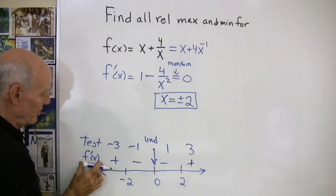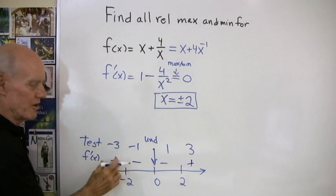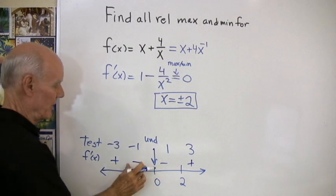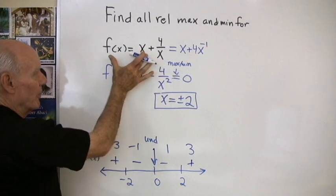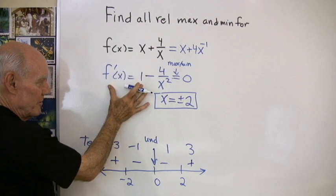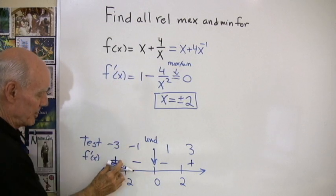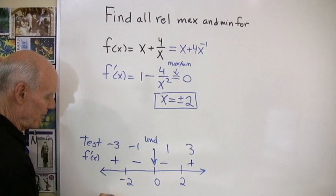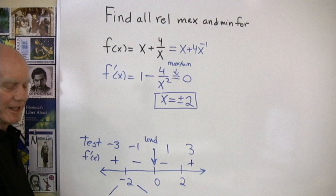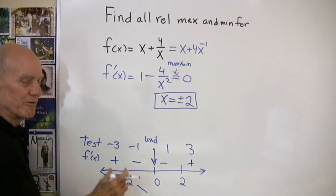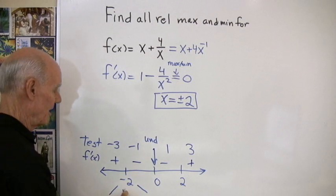The first derivative tells me when it's positive that the graph is increasing, and when it's negative that the graph is decreasing. So for this function, because the first derivative is positive here, that graph is going up, levels off, and then goes back down. That tells me x equals negative 2 must give me a relative maximum.